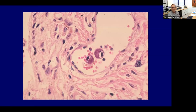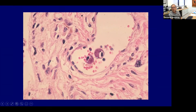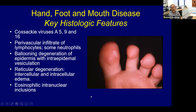Hand, foot, and mouth disease is caused by Coxsackie virus A5, A9, and A16. Clinically you get lancet-shaped acral vesicles. All viral infections — DNA viruses especially — tend to cause ballooning degeneration of keratinocytes. That's characteristic of those types of viruses. RNA viruses like measles sometimes don't even involve the epithelium much and can give just a superficial perivascular dermatitis.